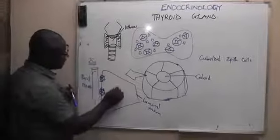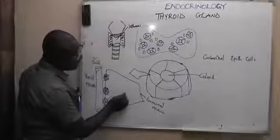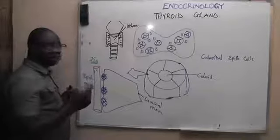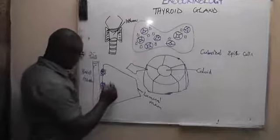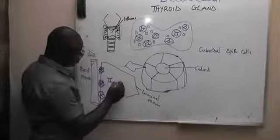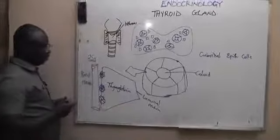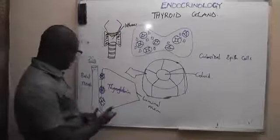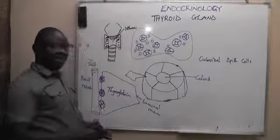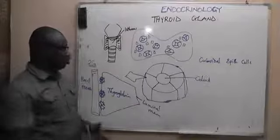Within the cytoplasm of this cuboidal epithelial cell, we also have a proteinous substance known as thyroglobulin. In a subsequent lesson you'll discover that thyroglobulin is also needed for the synthesis of T3 and T4.